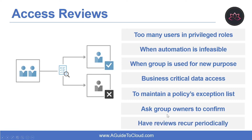The last use case is having reviews recur periodically. You can set up recurring access reviews at set frequencies such as weekly, monthly, quarterly, or annually, and reviewers will be notified at the start of each review. Reviewers can approve or deny access with a friendly interface and with the help of smart recommendations.